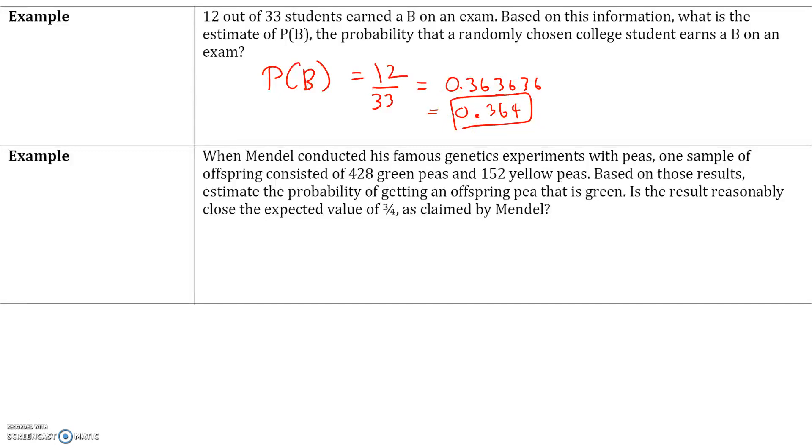So, the probability that a randomly chosen student earns a B on the exam is 0.364.